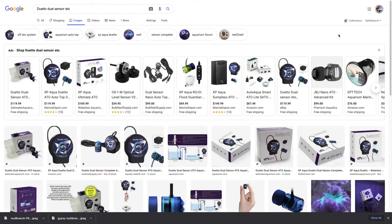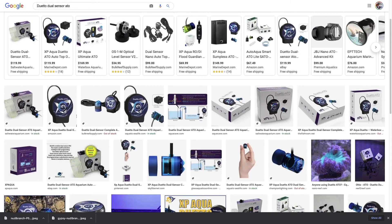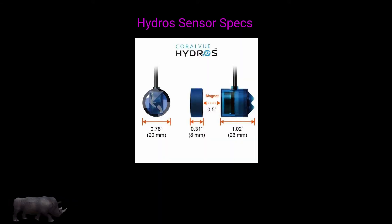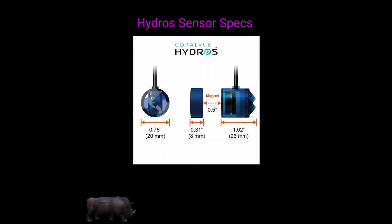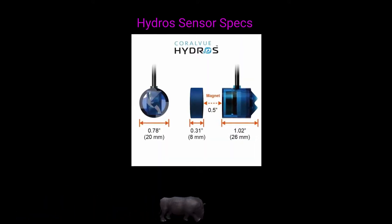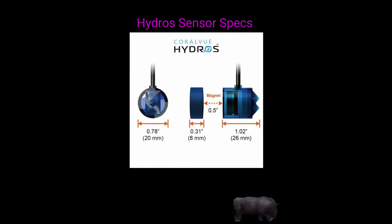I found some detailed specs online for the XP Aqua Duetto, so I'll be using this to create the reference model in Fusion 360, but before I do that, it's time for a super fast sketch.